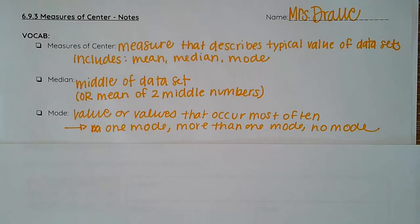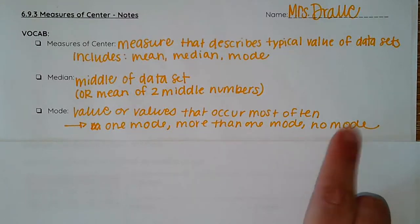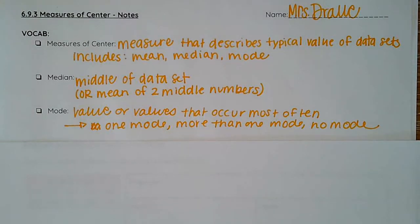You need to be careful when you're not given a mode. If no number occurs more than the others, or no data point occurs more than the others, then your response is no mode. We cannot put zero because zero is a numerical value, so it could be part of your data set. So we would write no mode if there is no mode.